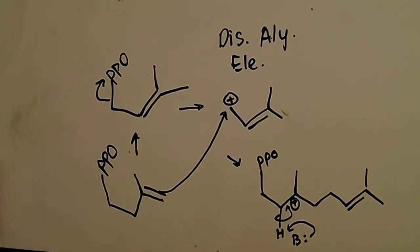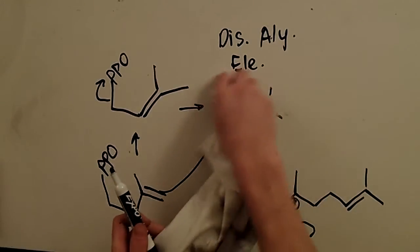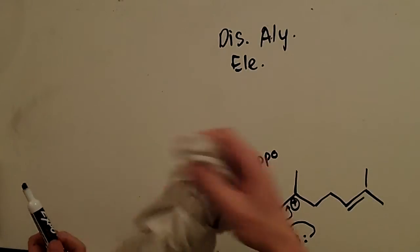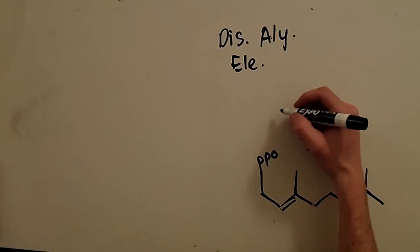Okay. So, what we've done now is we are two-thirds there. We've formed geranyl pyrophosphate. All we've got to do now is repeat. We do the same thing. We use this as if it was the dimethylallyl pyrophosphate, and we bring in another isopentenyl pyrophosphate.